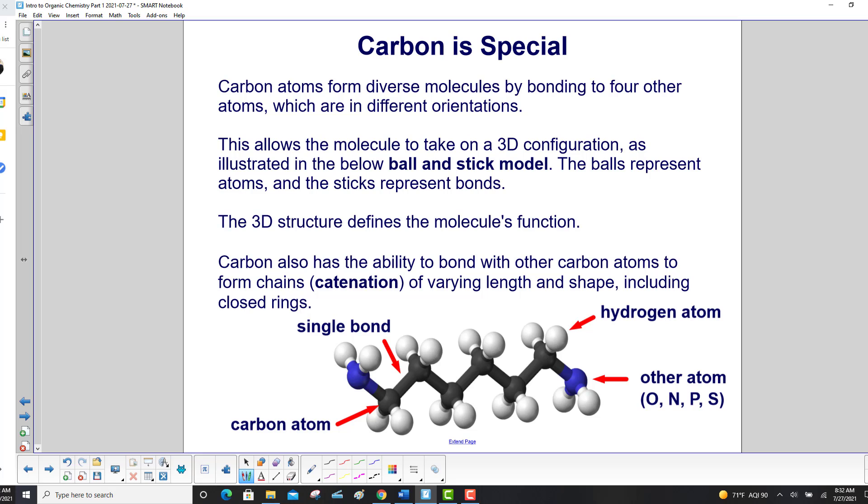Carbon also has the ability to bond with other carbon atoms to form chains, which is called catenation, of varying length and shape, including closed rings. So here's our chain of carbons. Those are all carbons. The balls are carbons, and those sticks are the bonds.